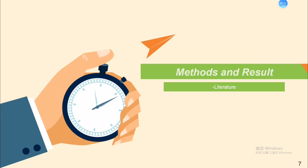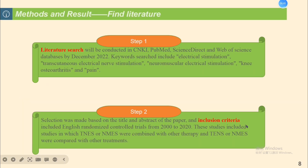The second part is Methods and Results. When looking for literature, keywords researched included electrical stimulation, transcutaneous electrical nerve stimulation, neuromuscular electrical stimulation, and pain. Experiments in which patients had undergone knee replacement surgery were excluded, as were studies using other electrical stimulation types and studies using implantable electrodes.